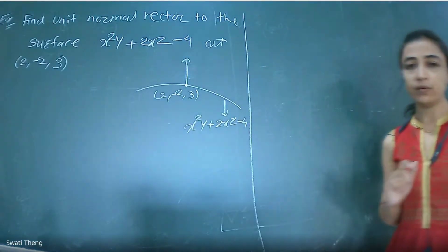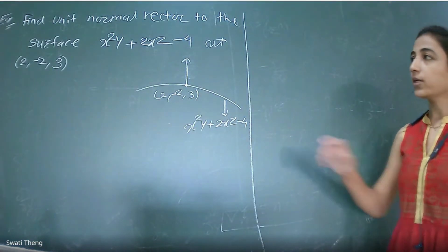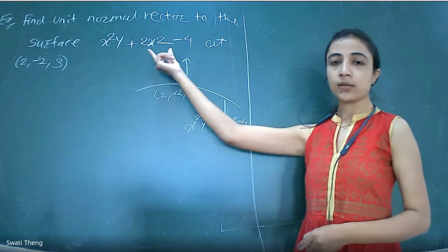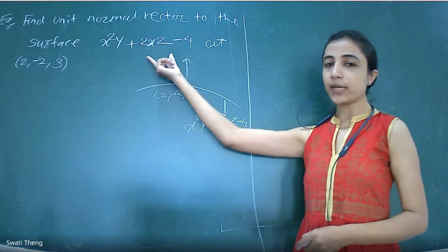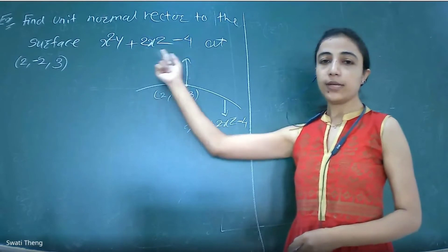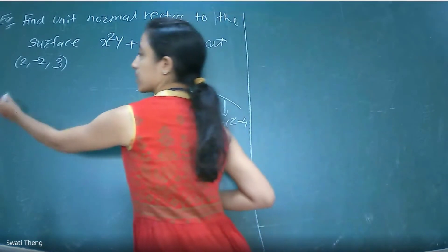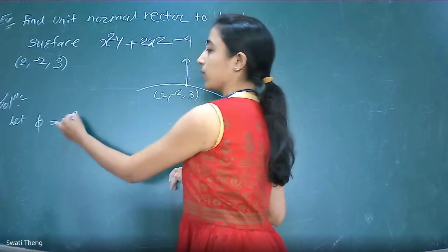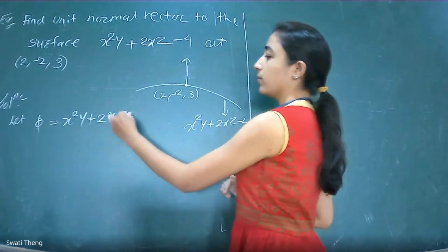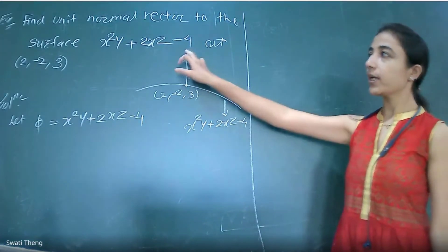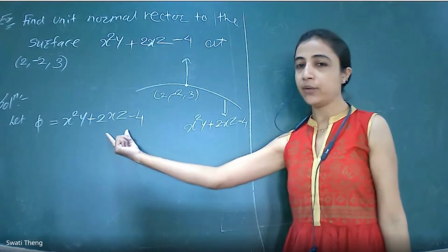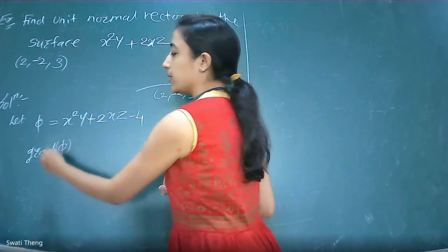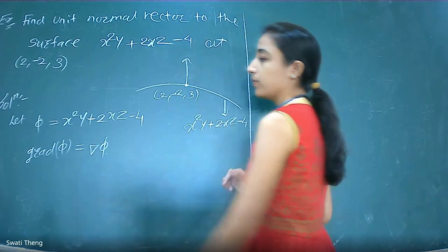So the first task is to convert this scalar function into a vector quantity by operating ∇ on it. Let φ = x²y + 2xz - 4. Assume this is the surface equation, i.e., this equals φ. Now we have to find gradient of φ, that is ∇φ.